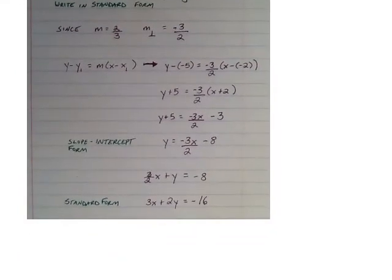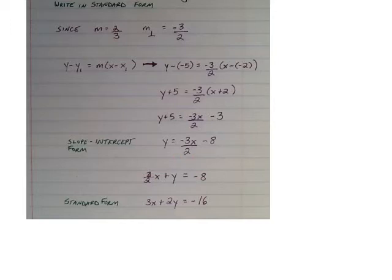If I move down the page, the first thing I did was I added 3 halves x to both sides. And this looks pretty close to standard form, except a is not an integer. So what I'm going to do is multiply everything by 2. And we have a standard form equation now. a is positive, and a, b, and c are all integers.